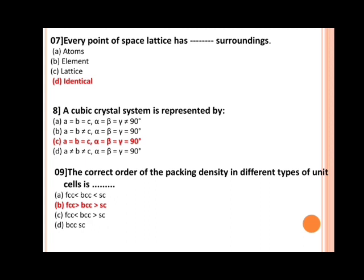Next, a cubic crystal system is represented by. Options are: a) a = b = c, α = β = γ ≠ 90°; b) a = b ≠ c, α = β = γ = 90°; c) a = b = c, α = β = γ = 90°; d) a ≠ b ≠ c, α = β = γ = 90°. Now, as we all know that the cubic crystal system has a cubic shape and a cube has all equal sides and angles. So the correct option is C: a = b = c, α = β = γ = 90° as the angles and sides are same.